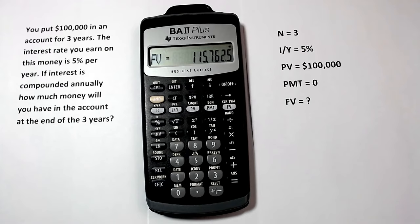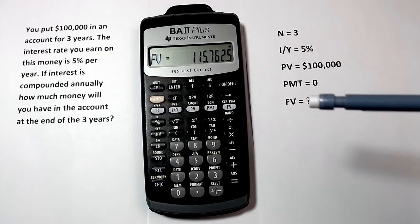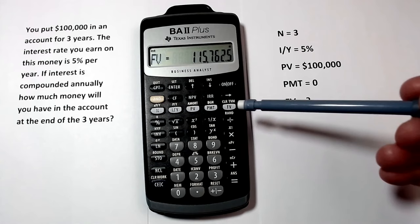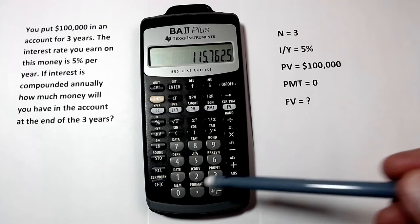When we're done with one problem and ready to do another, it's important that we clear out the time value of money worksheet. We do this by pressing second, then pressing the button that says CLR TVM. So now when we go back and look, we'll see that our time value of money worksheet is completely zeroed out.